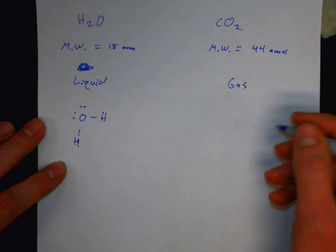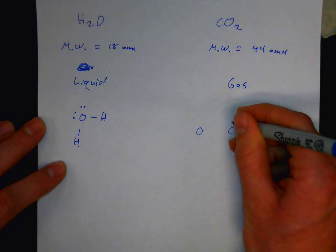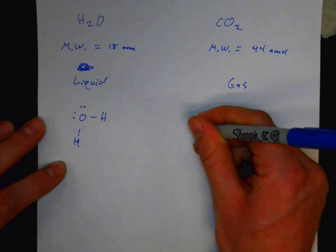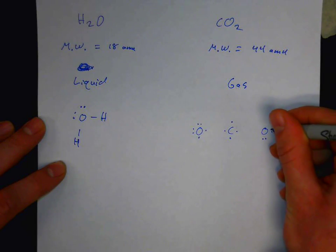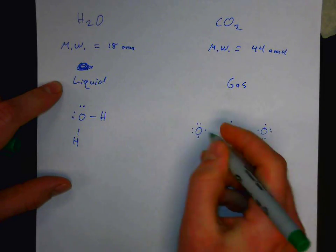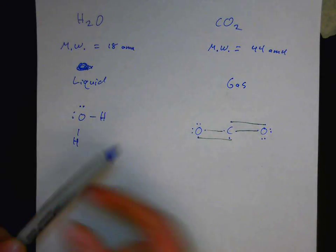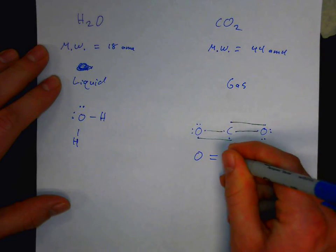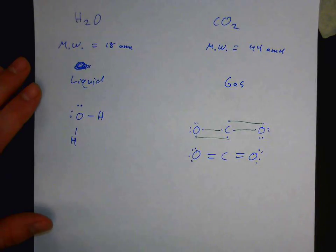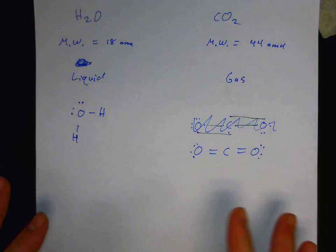For carbon dioxide, we have one carbon and two oxygens. Each carbon has four valence electrons and each oxygen has six. To achieve octets, bonding occurs at all four positions, resulting in double bonds on each side of the carbon. So carbon dioxide has a structure with two double bonds.